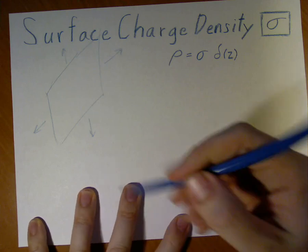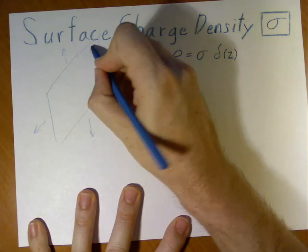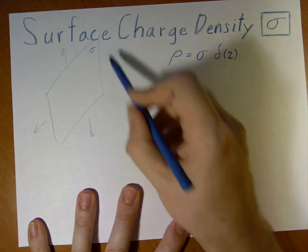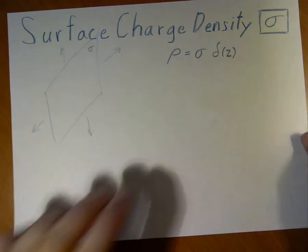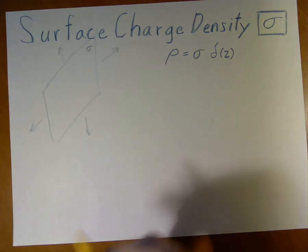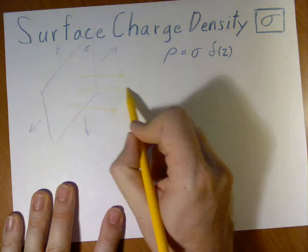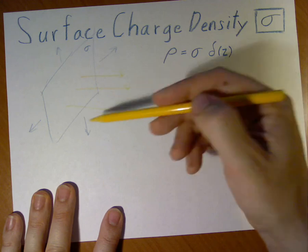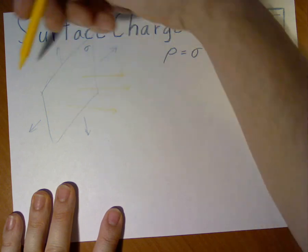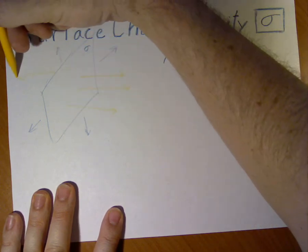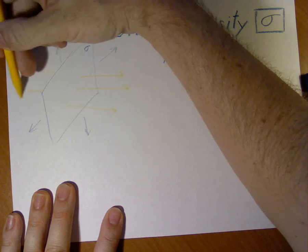Now, since this has a surface charge equally in all directions, by symmetry, we can say that the electric field must be coming off this way, equally, homogeneously. Likewise, it's coming off in the opposite direction on the other side as well.